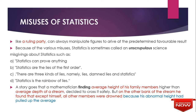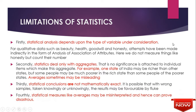A story goes that a mathematician, finding the average height of his family members higher than the average depth of a stream, decided to cross it safely. But on the other side he found that, except himself, all other members had drowned — because his abnormal height had pulled up the average. This illustrates how averages can be misleading, which is one of the drawbacks of statistics.